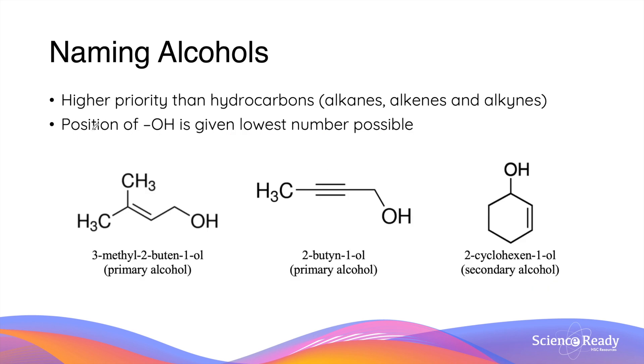In the organic chemistry nomenclature, alcohols are given higher priority than hydrocarbons. These are alkanes, alkenes, and alkynes. Thus, when we are indicating the position of the alcohol functional group, it is given the lowest number possible. Let's look at a few examples.